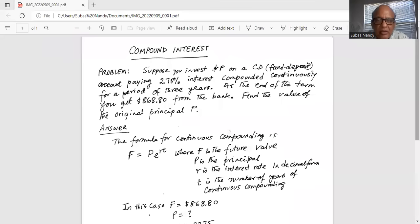Suppose you invest $P on a CD fixed deposit account paying 2.7% interest compounded continuously for a period of 3 years. At the end of the term, you get $868.80 from the bank.